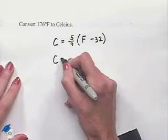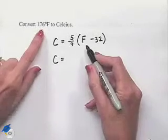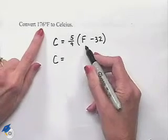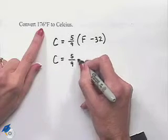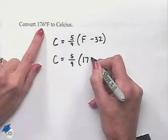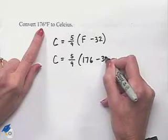We want to solve for C and we'll substitute for our value of F with the Fahrenheit temperature of 176. So we'll have 5 ninths multiplied times 176 minus 32.